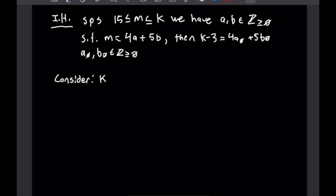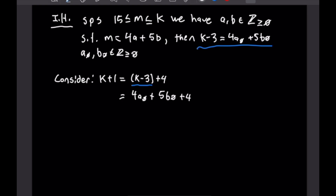Next we consider the K+1 case. We can see that K+1 = (K−3) + 4. Substituting our expression for K−3, we get K+1 = 4A₀ + 5B₀ + 4. We can factor out a 4 to get 4(A₀+1) + 5B₀. That completes our proof, as we have expressed the K+1 case in the proper form.